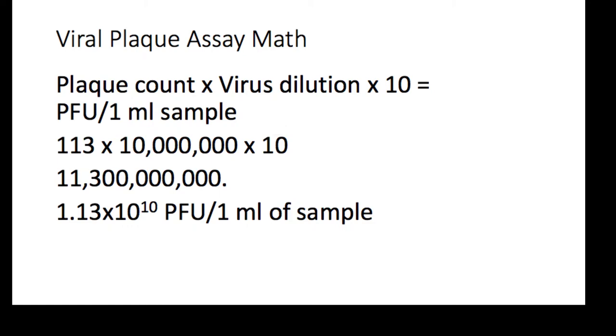The easiest way to do this is to take 113, and then just count up the zeros. So, count up the zeros in 10 million, and count up the zeros in 10, and just add them on to the end of 113.